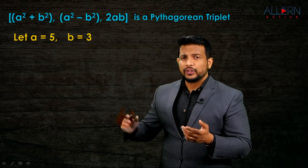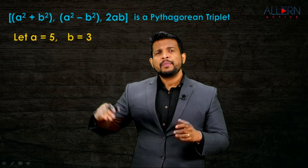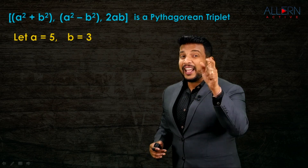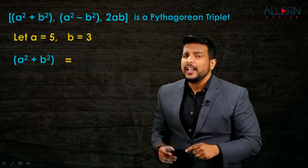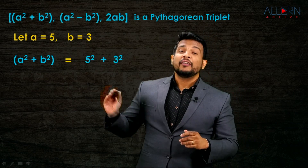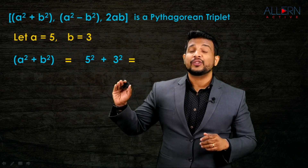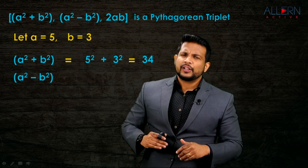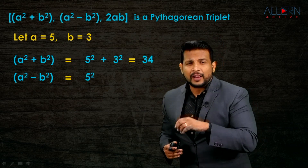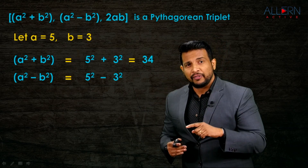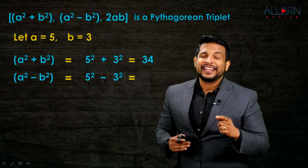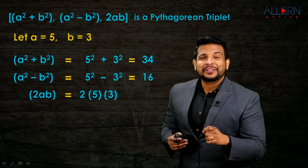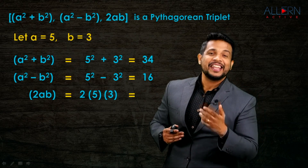And B equal to 3, so A is greater than B. The largest number is A²+B² = 5²+3² = 25+9 = 34. The next number is A²-B² = 5²-3² = 25-9 = 16. And the third number is 2AB = 2×5×3 = 30.